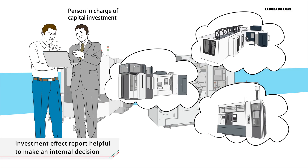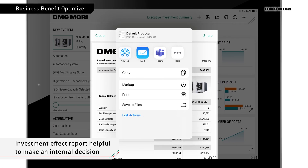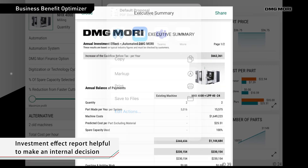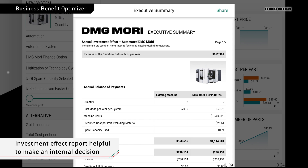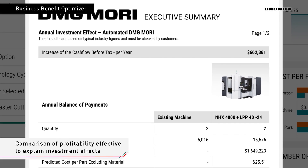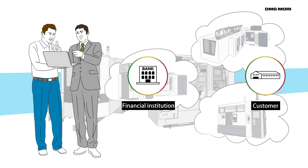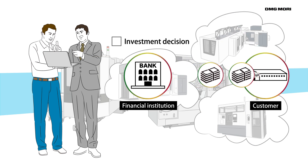We also provide an investment effect report that's helpful for making an internal decision at your company. The report indicates the comparison data of profitability, as well as operating rates and parts production costs. It is also effective when explaining investment effects to financial institutions for financing.